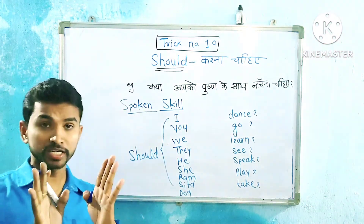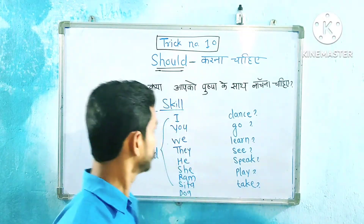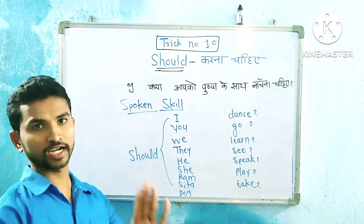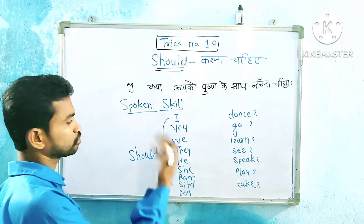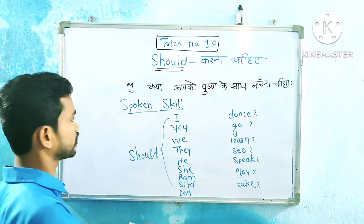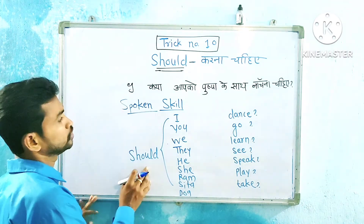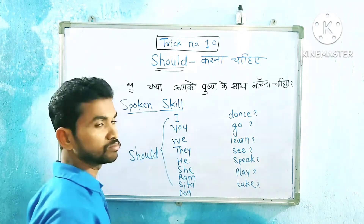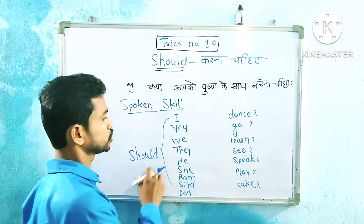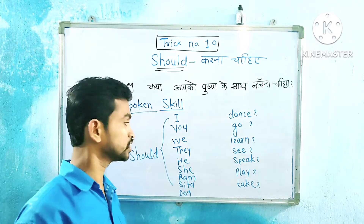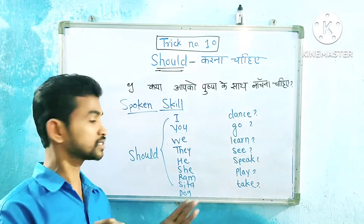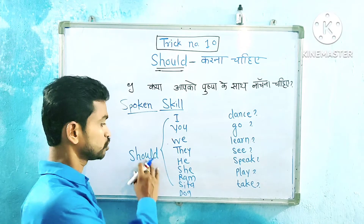Spoken skill means we practice how to use it. Should is a modal helping verb. Now practice with all subjects: Should I dance? Should you dance? Should we dance? Should he dance? Should she dance? Use every subject with 'should' and the verb to form questions.